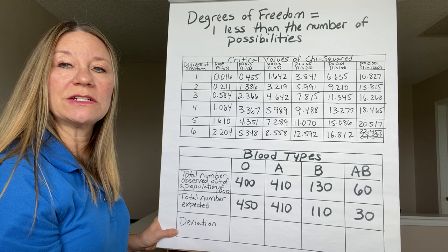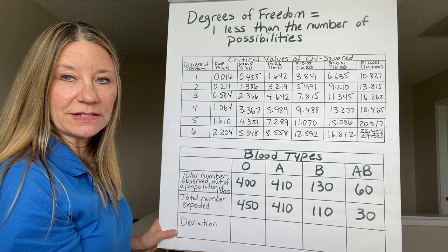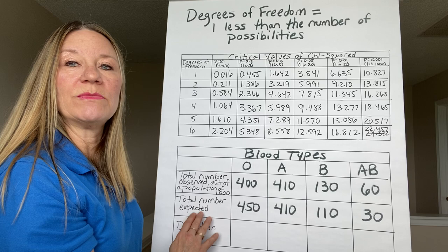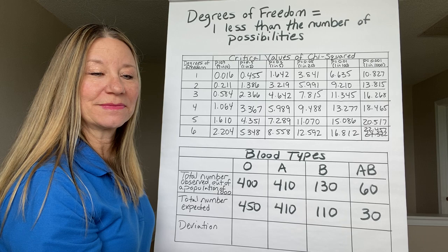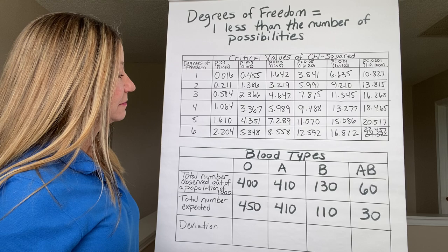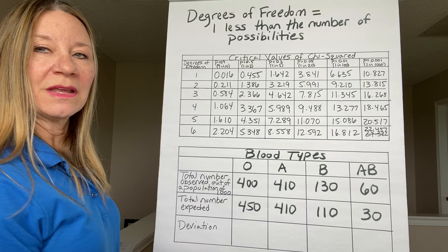If your number is higher than 7.815, it's likely there's some other contributing factor that makes us not follow what our expected ratios would be. So I'm going to give you a moment — go ahead and pause the video. It's your turn. You don't want to just watch me do the work.